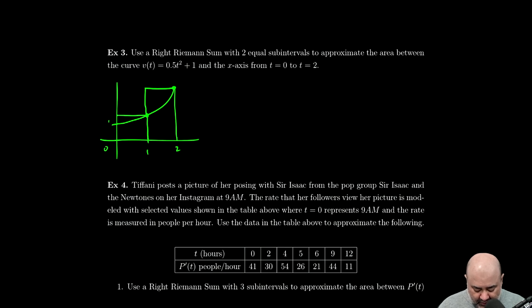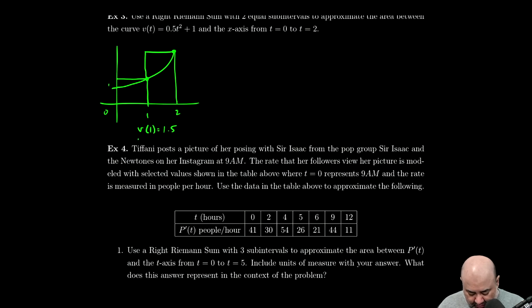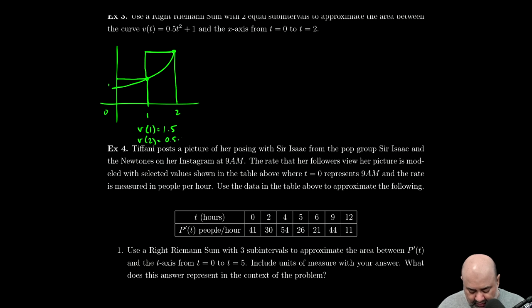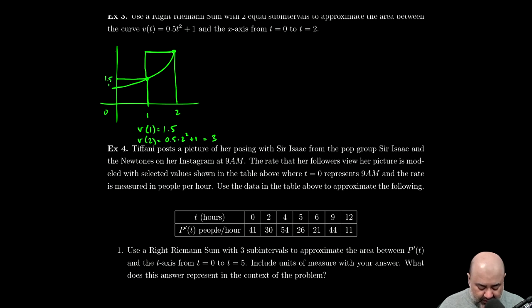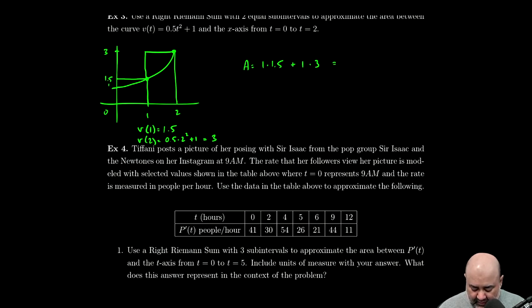Now the height at x = 1, or t = 1, we already figured out v of t, v(1) rather, was 1.5. We did that right here, 1.5. And now we need to figure out what v(2) is. So v(2) would be 0.5 times 2² + 1. 2² is 4, 4 times 1/2 is 2, 2 + 1 is 3. So we know that this height is 1.5 and we know that this height is 3. And at this stage we can just find the area. The area will be width times height, so 1 times 1.5, that's the height of the first rectangle, plus 1 times 3. So that's simply 4.5.